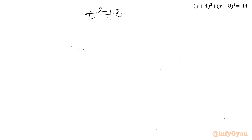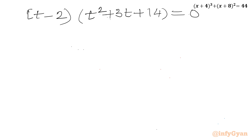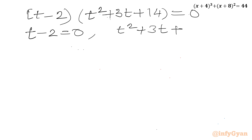So the two factors are t² + 3t + 14 = 0 and t − 2 = 0. We can conclude from here that we have to solve these two equations.